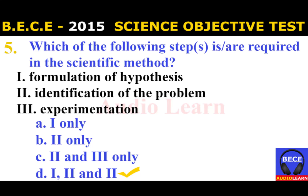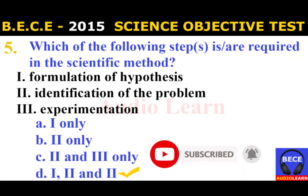Number 5: Which of the following steps are required in the scientific method? I. Formulation of hypothesis, II. Identification of the problem, III. Experimentation. Possible answers: A. I only, B. II only, C. II and III only, D. I, II and III. The answer is D: I, II and III — formulation of hypothesis, identification of the problem, and experimentation.